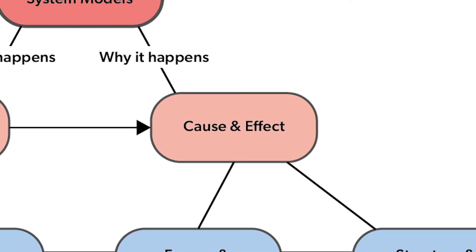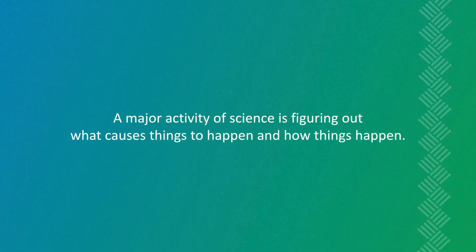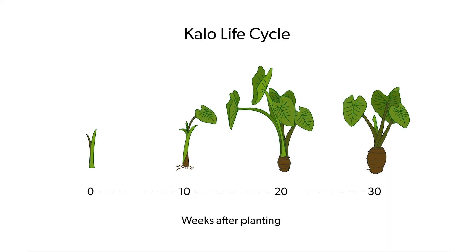Some cause and effect relationships are simple. An effect can have a single cause. Other effects may have multiple causes, or causes may have multiple effects. A major activity of science is figuring out what causes things to happen and how things happen. Noticing the life cycle pattern might make us ask what causes the colo to grow faster. We might wonder about what causes the life cycle to be longer or what causes the corm to get bigger.